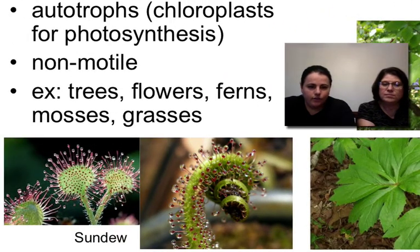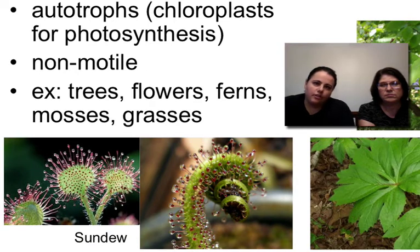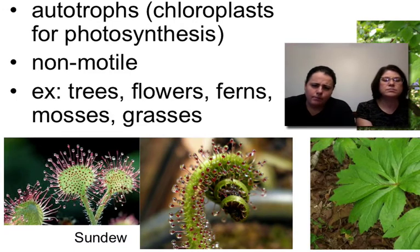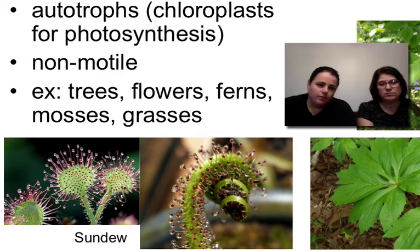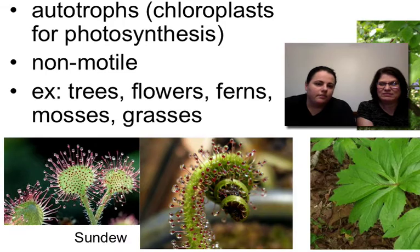We also have sundews, which are kind of like Venus flytraps. Some plants trap insects — sundews and Venus flytraps usually live in places with low nitrogen in the soil, and they need nitrogen to survive but can't get it from the soil. Sundews use sticky sap droplets to trap an insect and roll it in, then release enzymes to break down the insect and absorb nitrogen directly through their cells. When done, they let go of the exoskeleton, which falls to decompose on the ground.